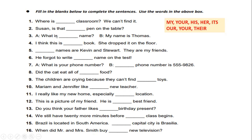Number three: what is your name? My name is Thomas — person A asks, person B responds. I think this is her book — see here it says 'she', so it's 'her'. She dropped it on the floor. Now here — their names are Kevin and Stuart. They are my friends. He forgot to write his name on the test — we're talking about him. What is your phone number? My phone number is 555-982-6.